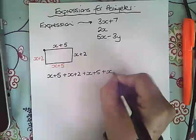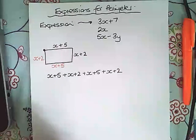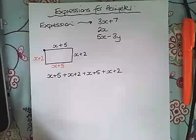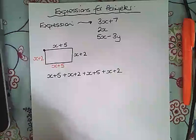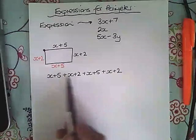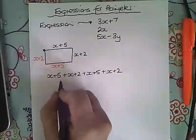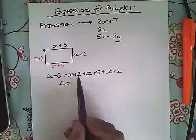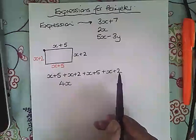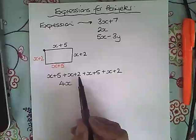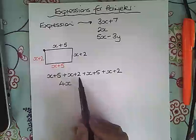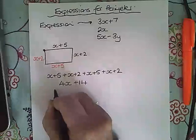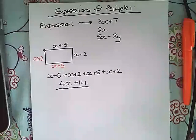There is a mark for writing down in a question how you are getting this expression for the perimeter. Then we tidy it up and collect together the things that we can collect together. So the x's we can collect together and there are one, two, three, four of those, so we can write that as 4x. And then the numbers we've got 5 plus 2 plus 5 plus 2, so five and two is seven, and seven and seven is 14. So 4x plus 14 is the answer to finding an expression for the perimeter of that rectangle.